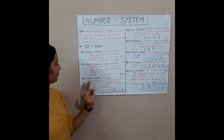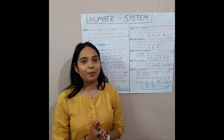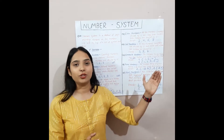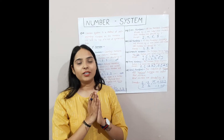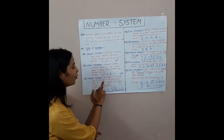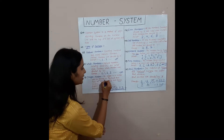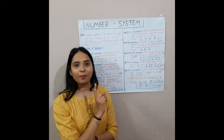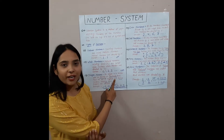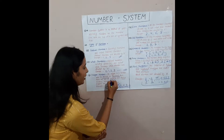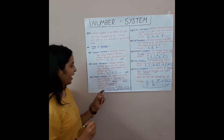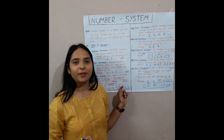Let's move to the next number: integers. For example, minus 3, minus 2, minus 1, 0, 1, 2, 3 — these are all called integer numbers. An integer is a number with no decimal or fractional part. Integer numbers only have negative numbers, positive numbers, and including 0. Integer numbers are denoted by capital Z.